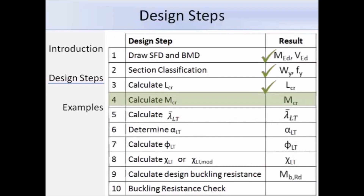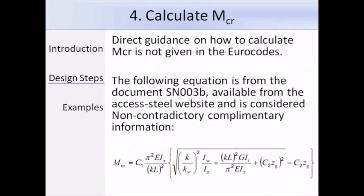That's step 3 complete, and the next step is to calculate M_CR, which can be quite difficult. Direct guidance on how to calculate M_CR is not given directly in the Eurocodes; therefore for this presentation I will refer to the SN003 document, which is available from the Access Steel website. This document is classed as an NCCI — Non-Contradictory Complementary Information. This is the equation the document gives you, and although it looks quite complicated, on the next couple of slides I'll break it down and you'll soon see it's not too difficult to use.